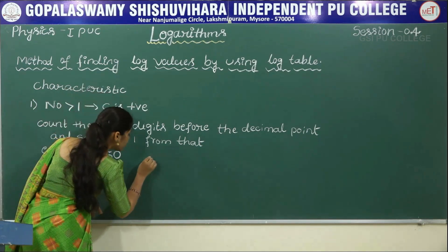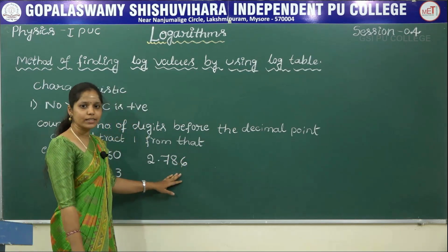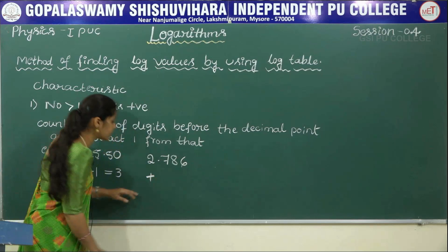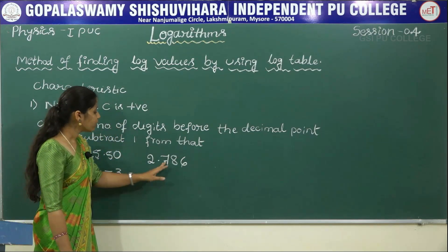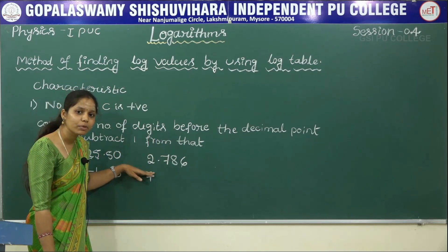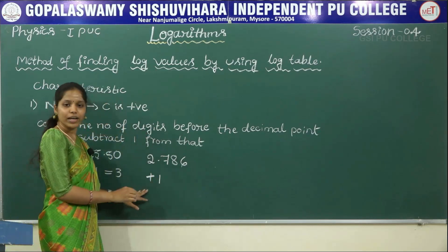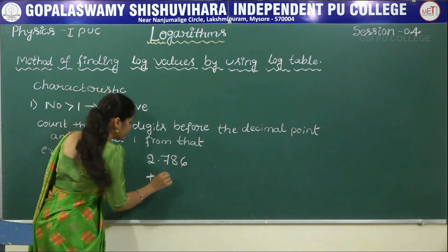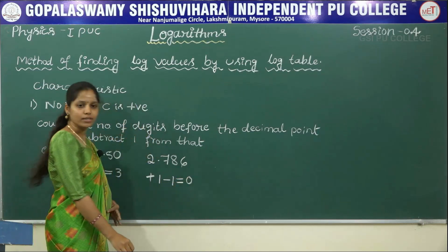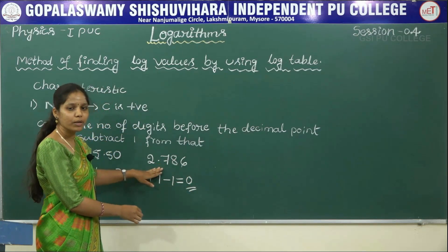Consider one more example: 2.786. This number is greater than one, so its characteristic is positive. We count the digits before the decimal point — one digit. We subtract one from that: 1 minus 1 gives zero. So zero is the characteristic of this number.